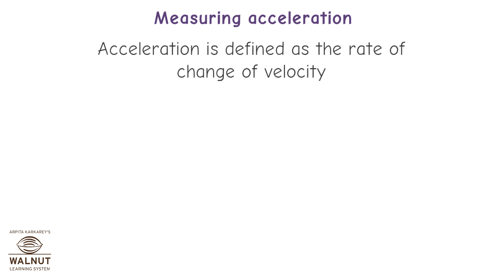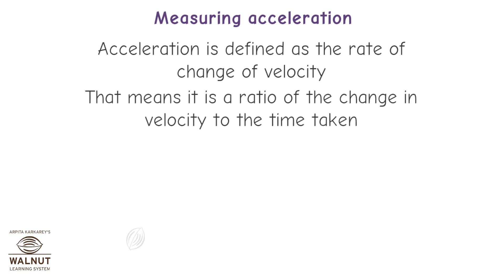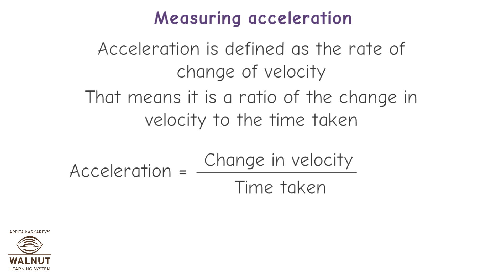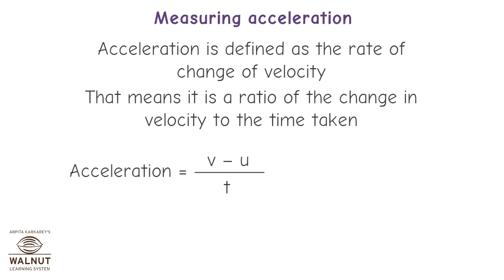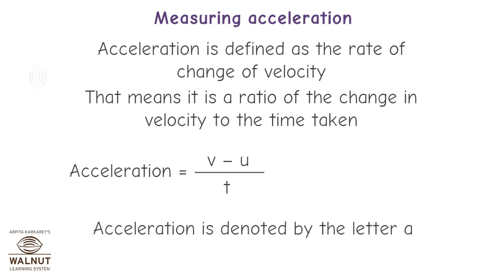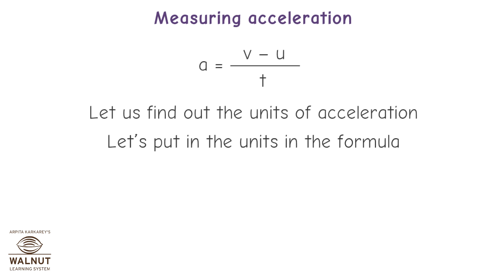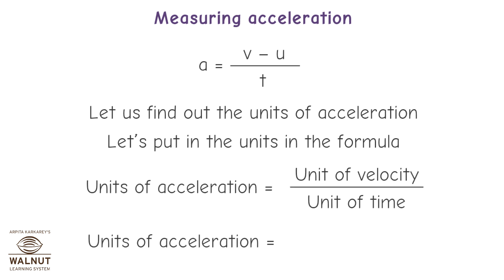Measuring acceleration: Acceleration is defined as the rate of change of velocity — it is the ratio of the change in velocity to the time taken. Acceleration equals change in velocity divided by time taken, which equals final velocity minus initial velocity divided by time taken: A = (v − u) / t. The units of acceleration are meters per second squared (m/s²).